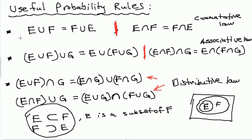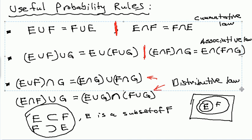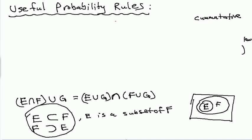And we can also have a case where E is a subset of F and F is a subset of E, in which case this implies that E equals F. So, this is saying all the outcomes of E are contained in F, and all the outcomes of F are contained in E.